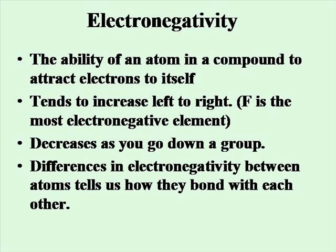Remember, electronegativity is the ability of an atom that's in a compound to attract the electrons to itself. Fluorine, being the smallest, is the most electronegative element. Electronegativity decreases as you go down a group and increases left to right. The differences in electronegativity will tell you how atoms bond with each other and the polarity of that bond.